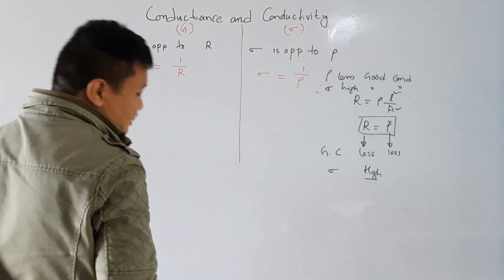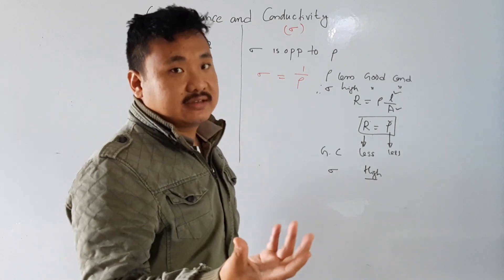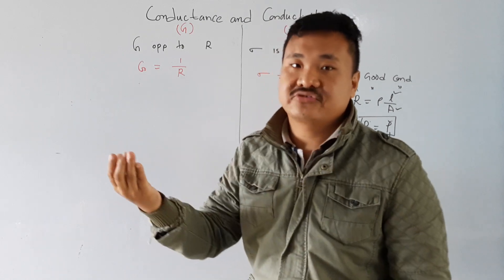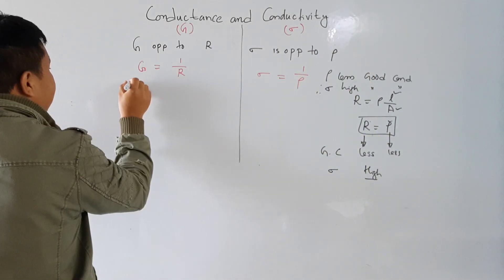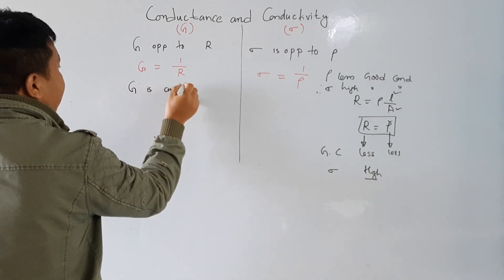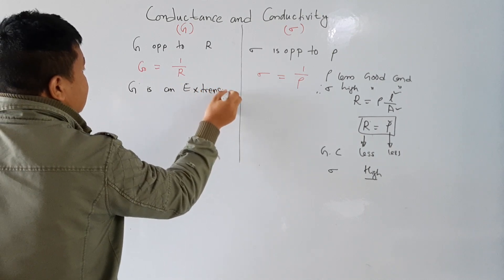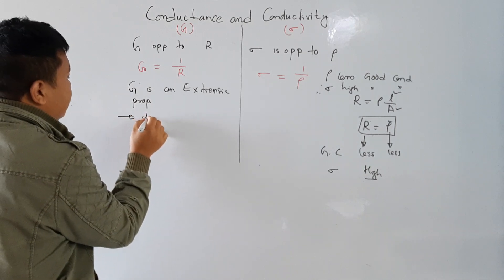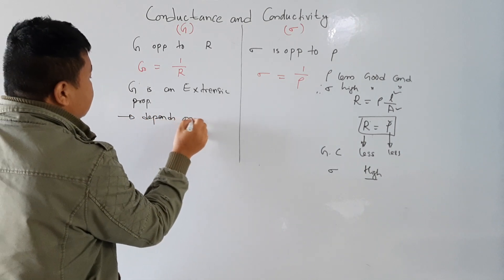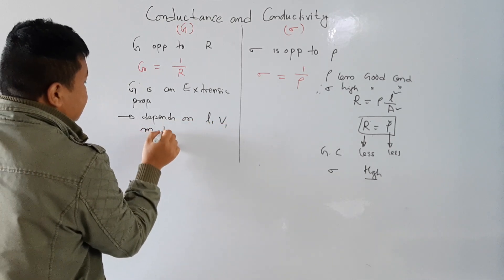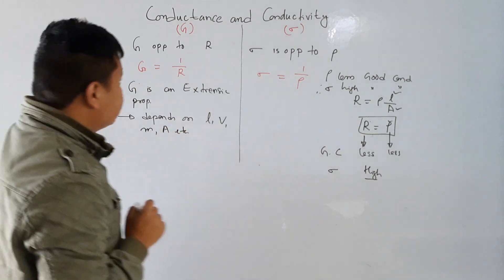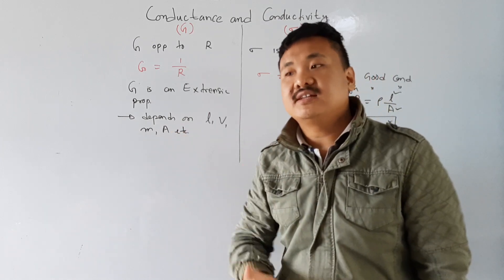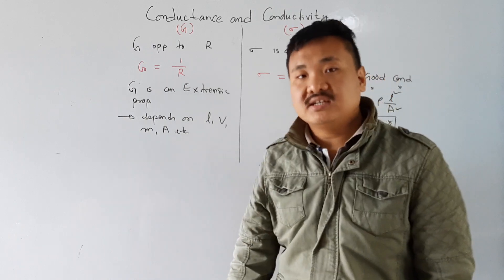Resistance is a property which is extrinsic. Similarly, conductance is also a property of the material which is extrinsic. So conductance G is an extrinsic property. If it is an extrinsic property, then it depends upon length, volume, mass, area, etc. The conductance also depends upon the length, volume, area, and mass of the material.